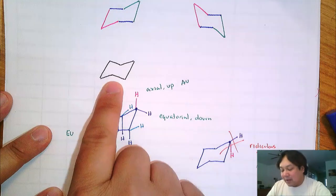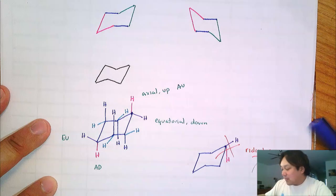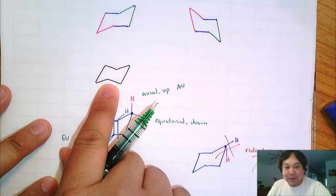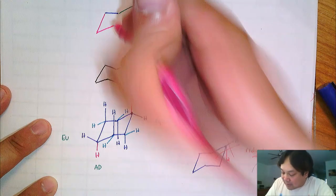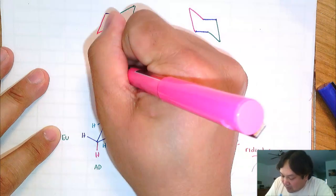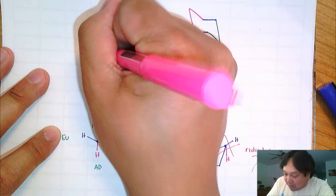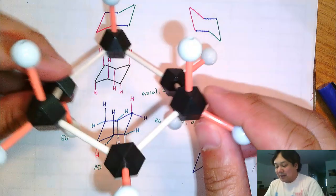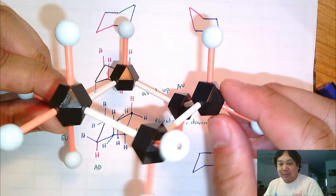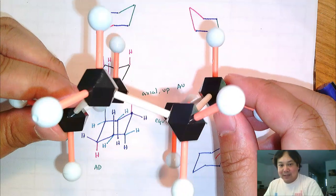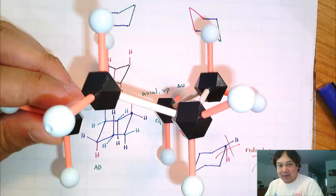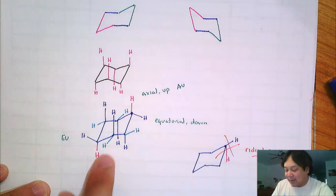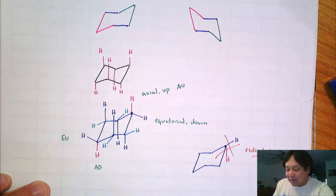The textbook tips the chair slightly, which makes the equatorial up/down and axial up/down a little more clear. It's perfectly fine to draw it that way. When I put those hydrogens on, we have up, down, up, down, up, down. I know there are bonds on paper that cross, but that's because it's impossible to show 3D on a flat piece of paper. These bonds in the back are just behind the bonds in the front — don't worry about it. Just draw the line straight through the lines in the back.